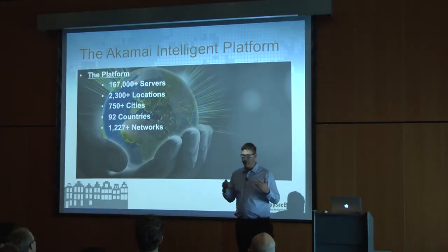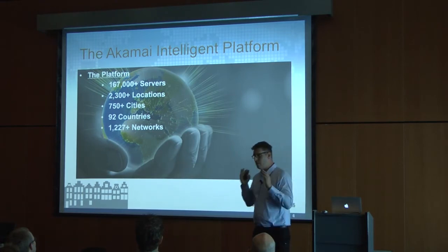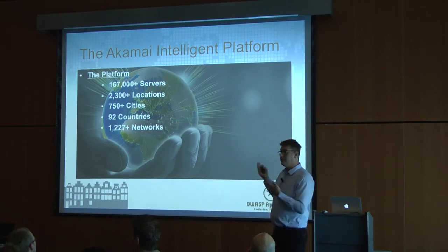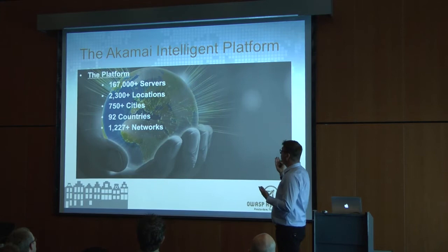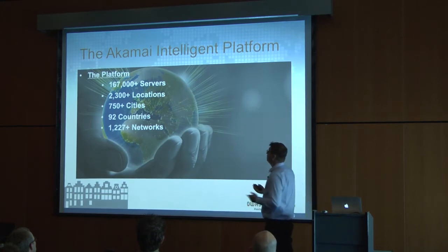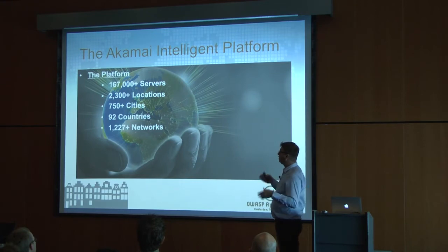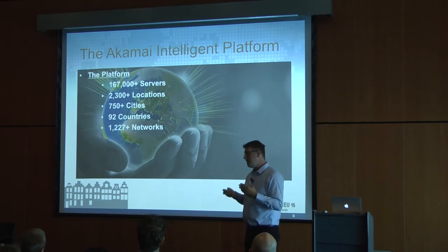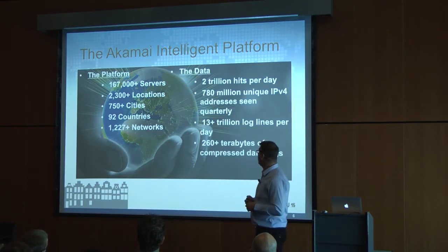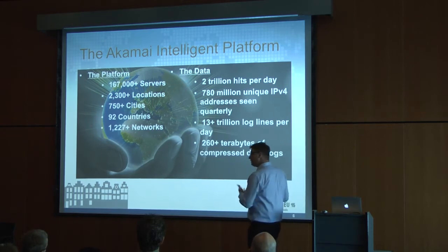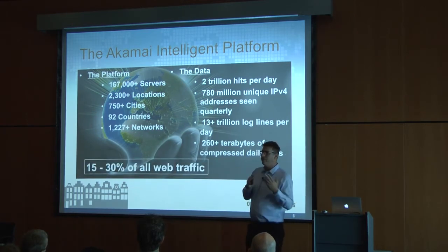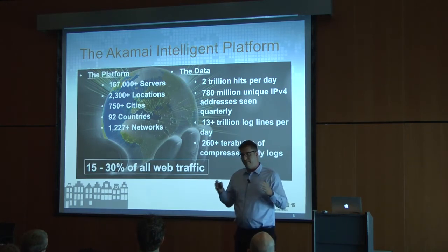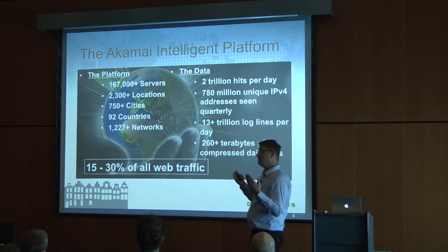Before moving forward, I'd like to spend one minute talking about the system we work on — Akamai, a content delivery network vendor with intelligent platforms. We have almost 170 servers around the world, across many cities and countries. A lot of data goes through Akamai's system, but the more important part is that between 15% to 30% of internet traffic goes through Akamai. Our story is based on that data.